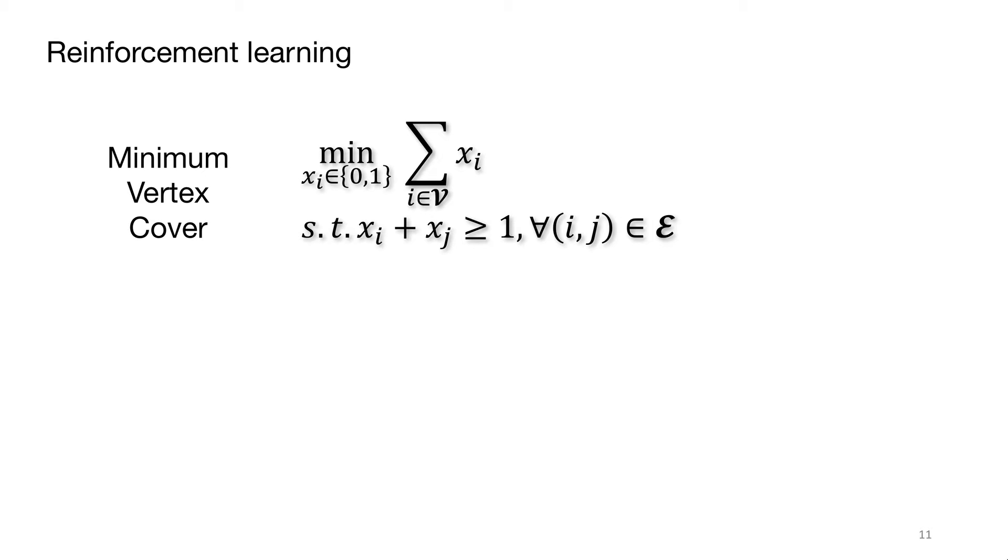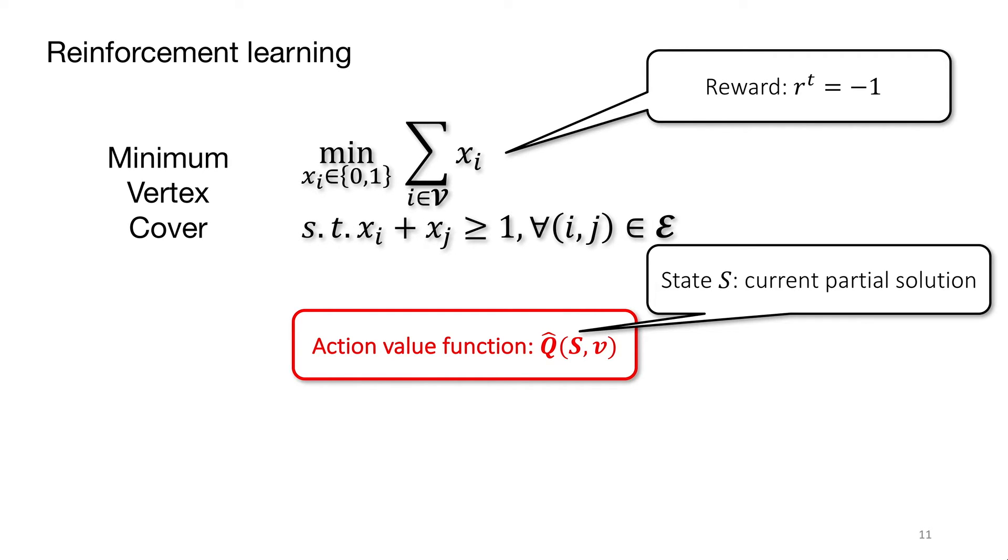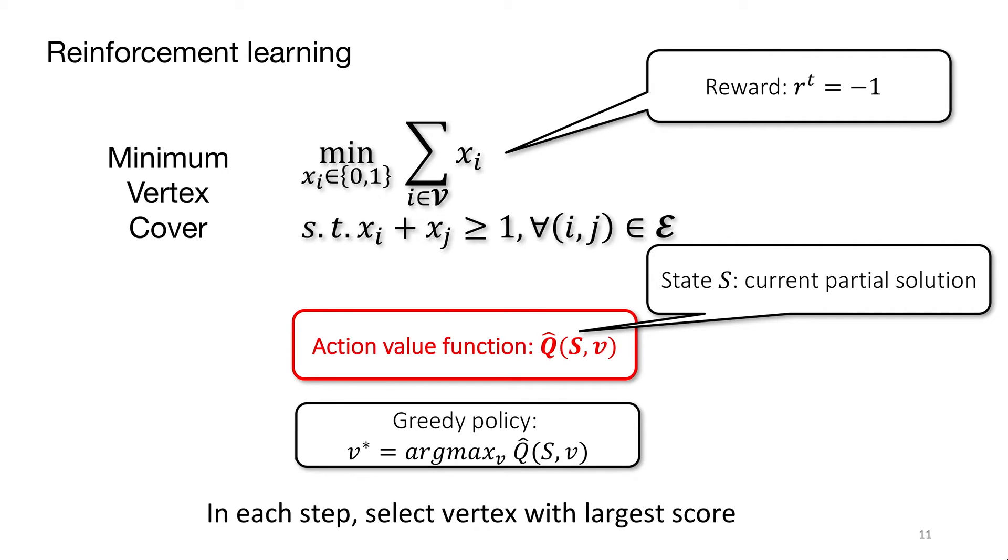Given the integer programming formulation, a constant reward is a good choice. The Q function takes the current partial solution and our candidate vertex as input and returns additional number of vertices required. Our greedy policy should select the best node at each step.